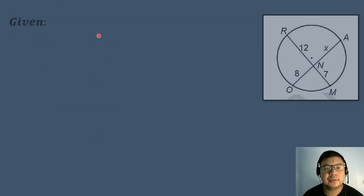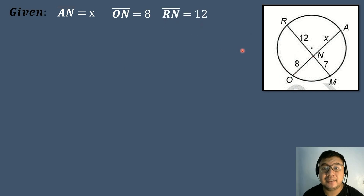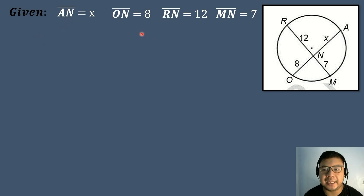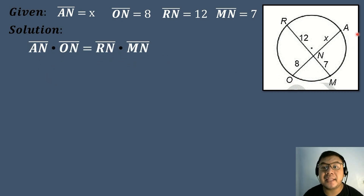Let's have our next example. We have a given circle where segment AN equals X, segment ON equals 8, segment RN equals 12, and segment MN equals 7. We need to find the measure of segment AN. We have two chords: chord RM and chord AO. The formula is: segment AN times segment ON equals segment RN times segment MN.